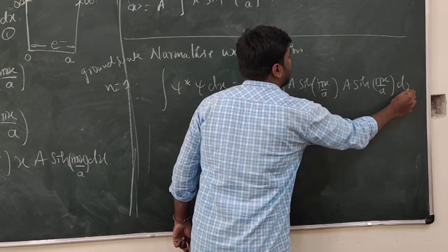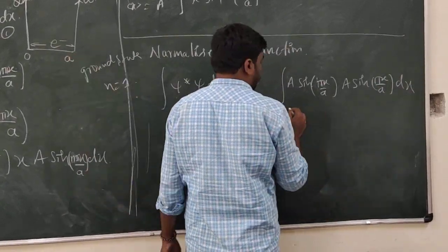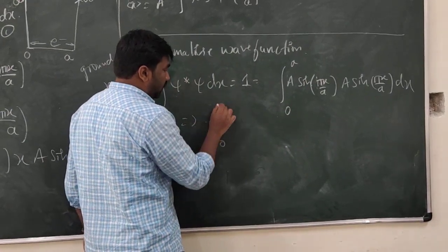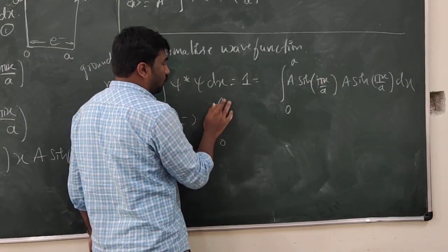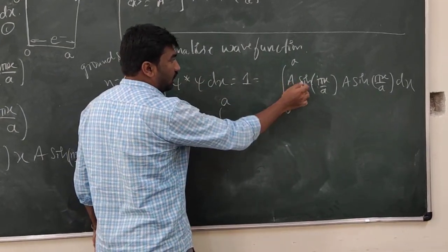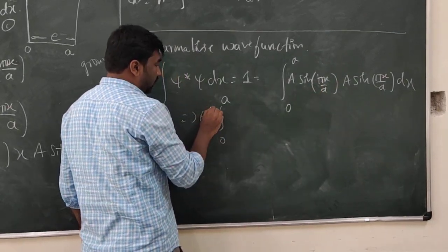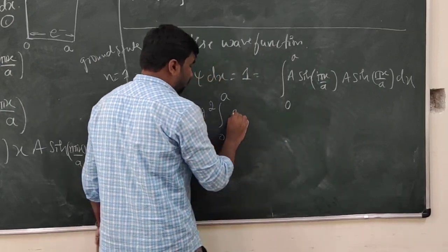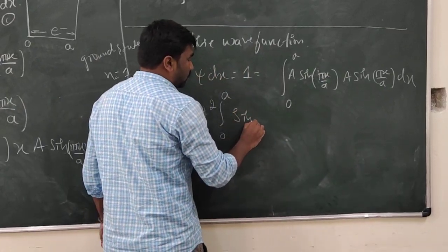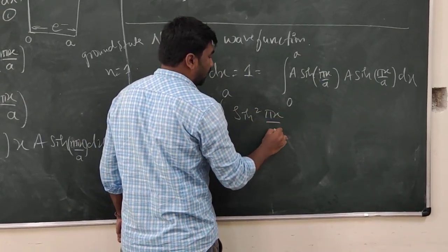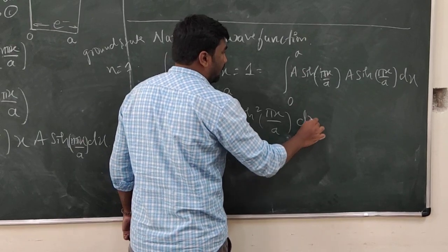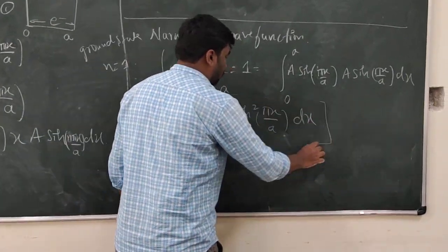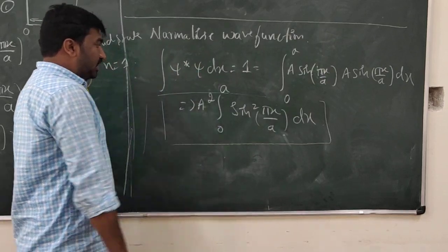With box length 0 to a, the normalization integral becomes: the integral from 0 to a of A sin(πx/a) into A sin(πx/a) dx, which gives A² times the integral from 0 to a of sin²(πx/a) dx. We now need to integrate this.